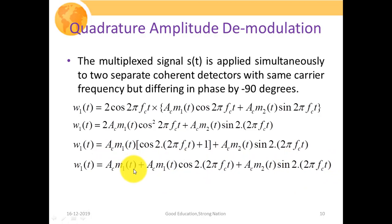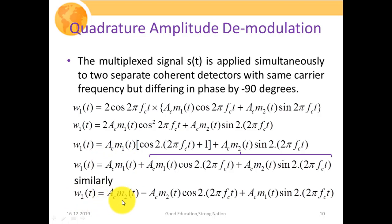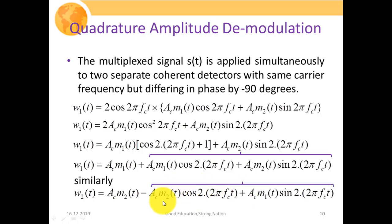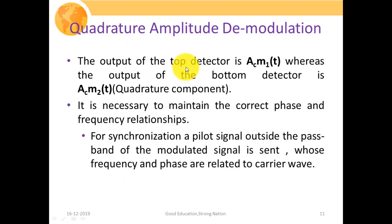Passing this complete signal through a low pass filter with cutoff frequency FM — where FM is the maximum frequency component of the message signal — the two higher frequency terms are rejected and we are left with Ac·M1(t). Similarly, W2(t) = Ac·M2(t) − Ac·M2(t)·cos(2·2πFct) + Ac·M1(t)·sin(2·2πFct). After passing through the low pass filter, only Ac·M2(t) remains. So the output of the top detector is Ac·M1(t) and the output of the bottom detector is Ac·M2(t).